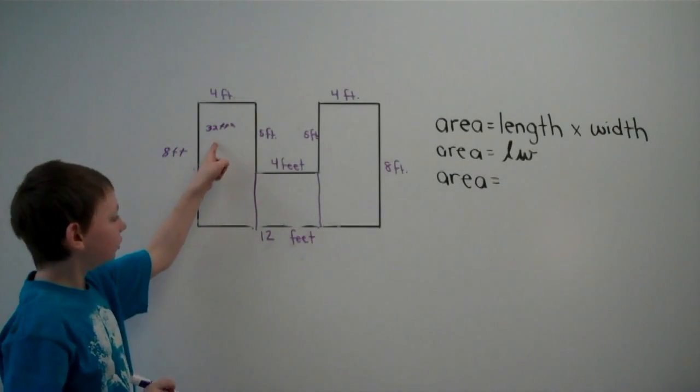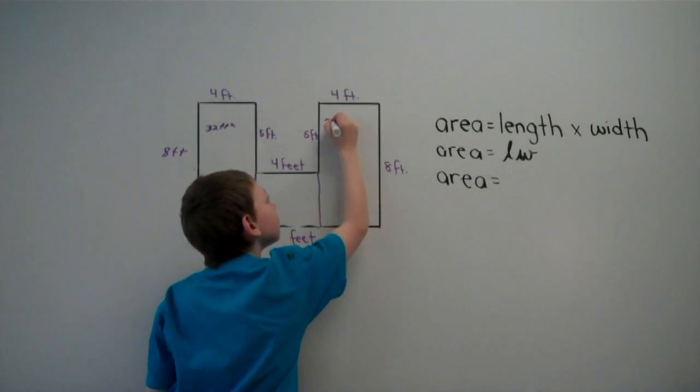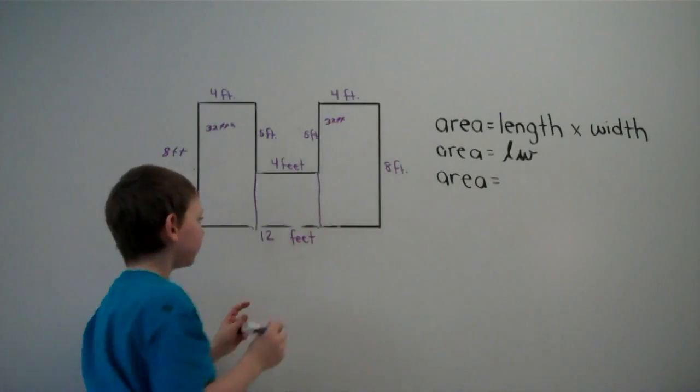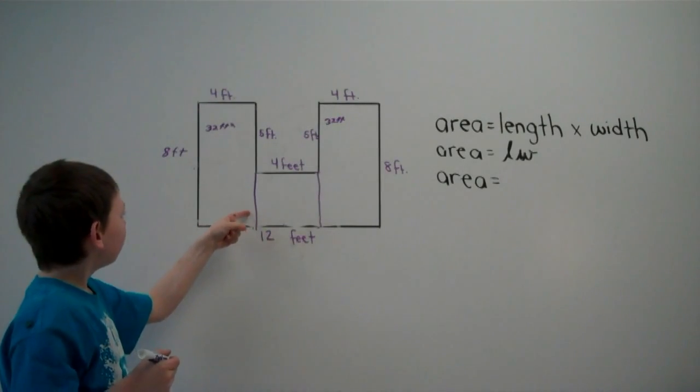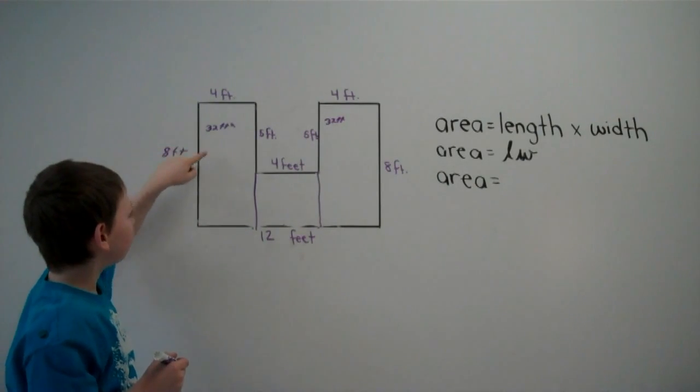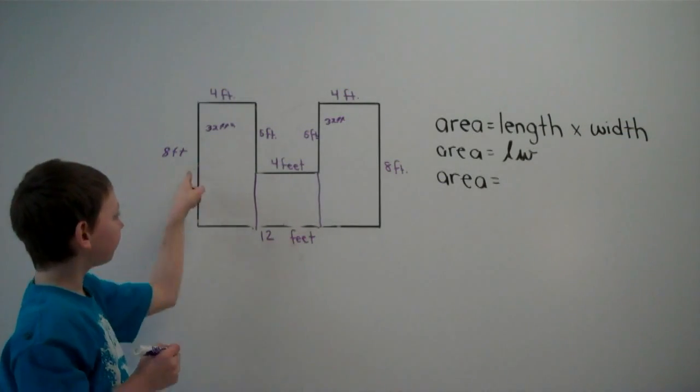So if we know this is 32 square feet, then this has to be 8. Now we have to find out what this part of the room is. So if we know that this is 8 and this is 5, so 5 plus 3 equals 8.